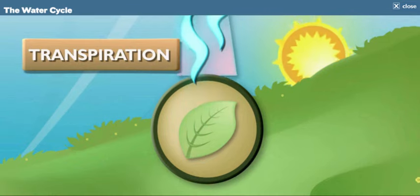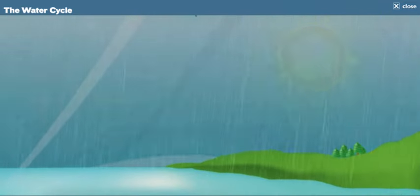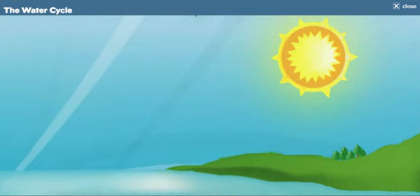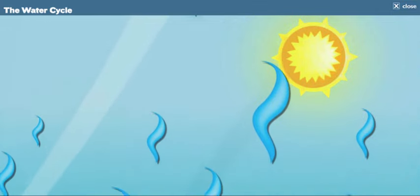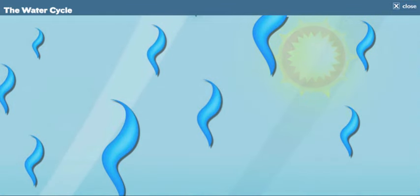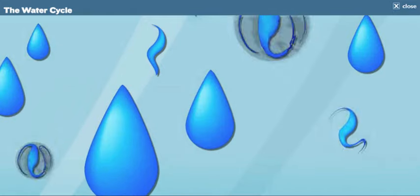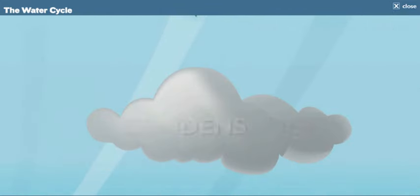So, Mr. Water Cycle Wizard, what happens next? Remember, what comes down must go up. The water vapor gas rises in the air. As it does, it cools down. That makes the gas turn back into droplets of water, and they form clouds. It's called condensation.